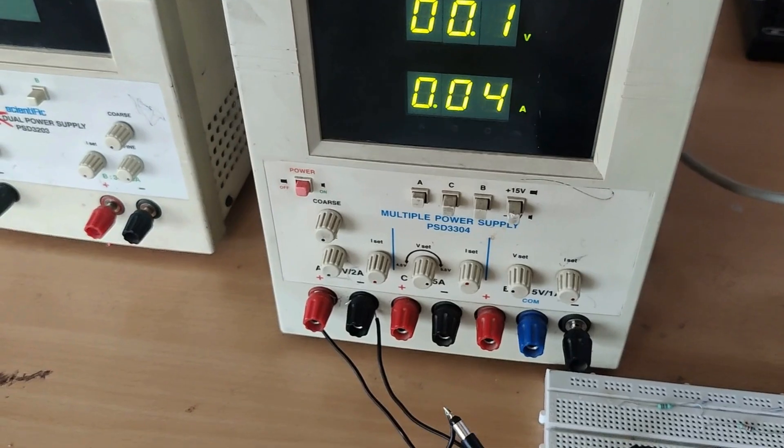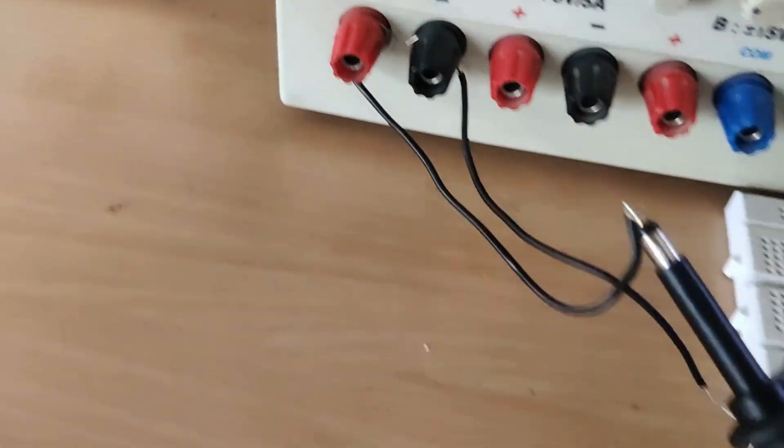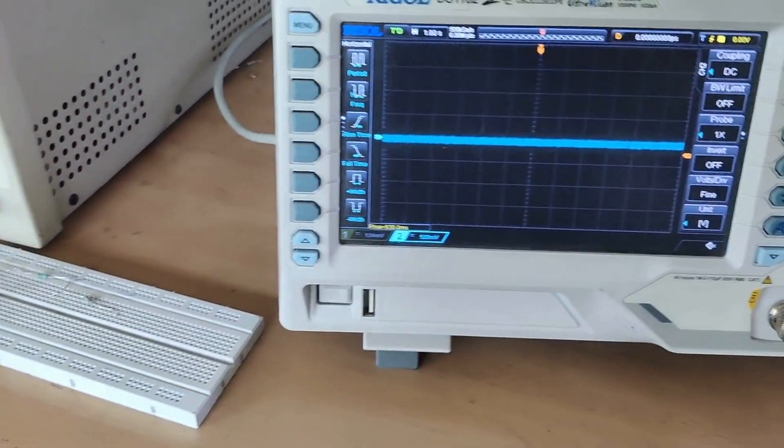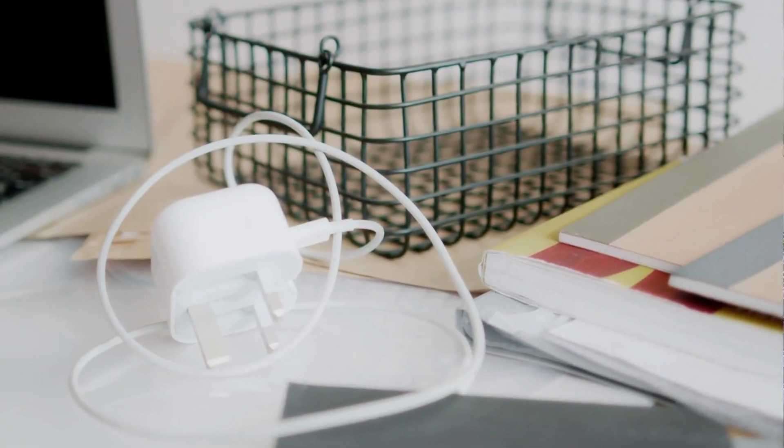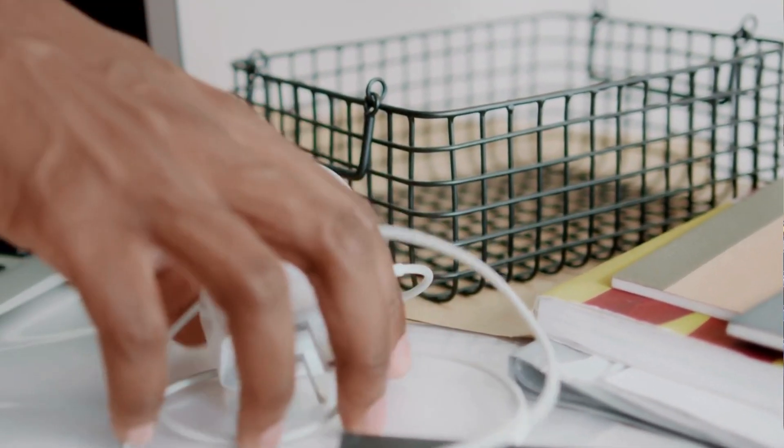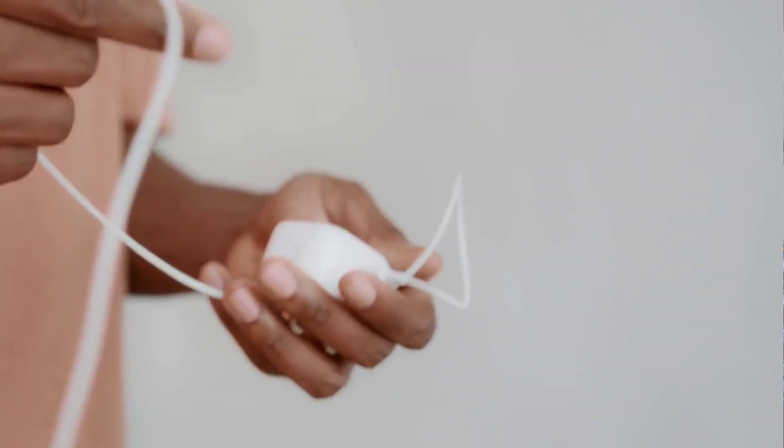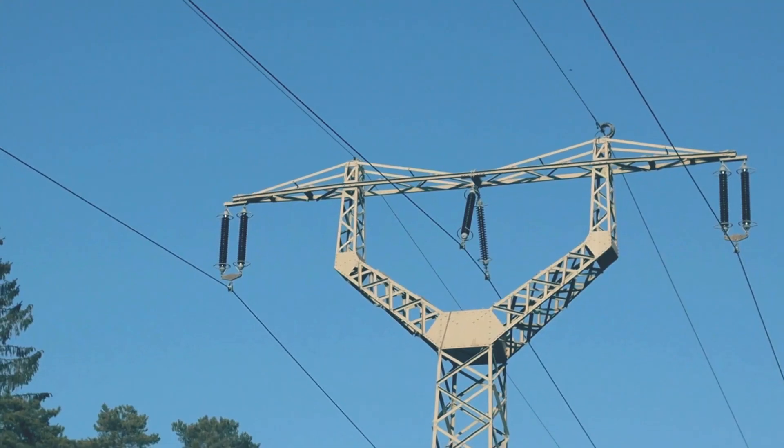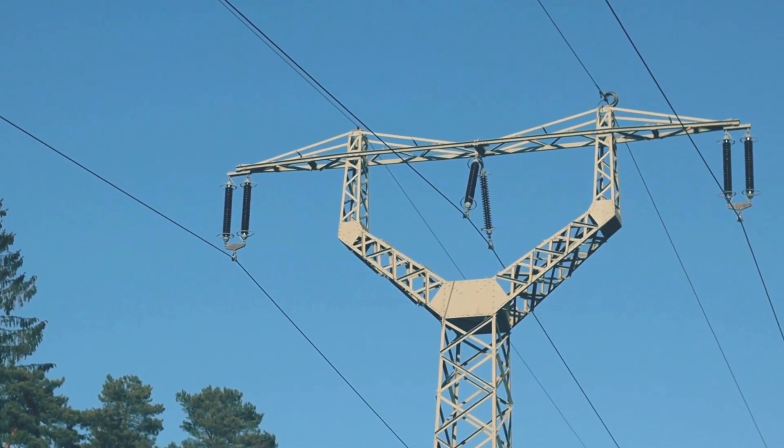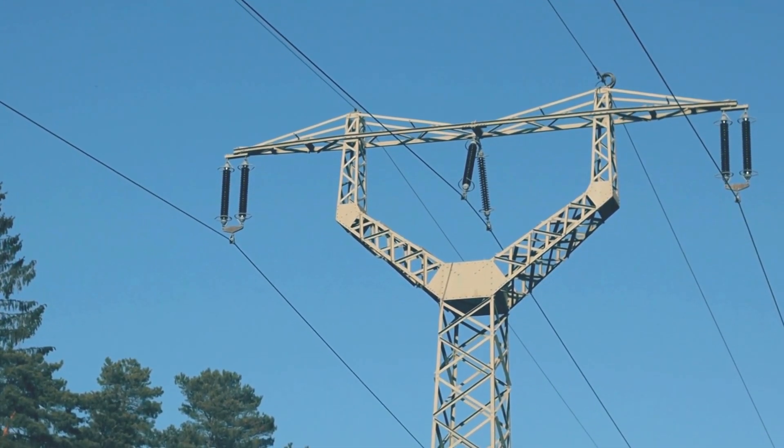On the other hand, direct current is the unsung hero in many of our gadgets, as it is stable and constant. Think about the battery in your phone or laptop. It is perfect for devices that need a steady and reliable power supply. But transporting DC over long distances is not so efficient because it loses power faster and is harder to convert from high to low voltage.